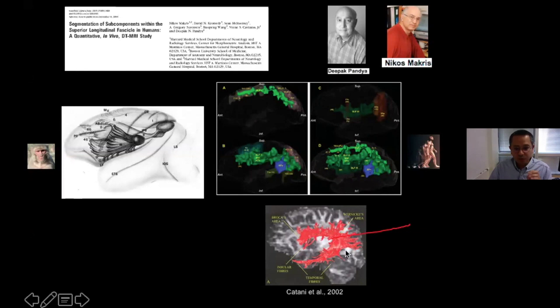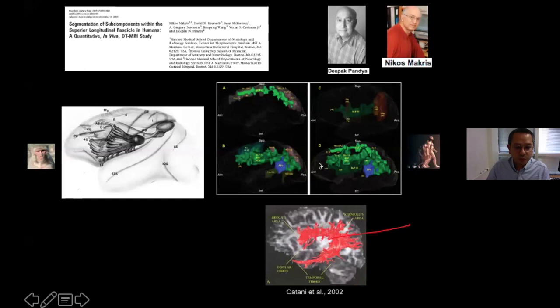So we have SLF1, SLF2, SLF3, the arcuate, and the last component — most recently first introduced in diffusion imaging by a researcher named Catani — is the posterior component. You see that the SLF fibers are all horizontal or arcuate, but there are also some shorter ones connecting parietal to temporal lobe. There is a frontal-parietal connection, a frontal-temporal connection, and a parietal-temporal connection — this is what we call the posterior component. So there are five things to remember: SLF1, SLF2, SLF3, arcuate, and the posterior component or posterior segment.